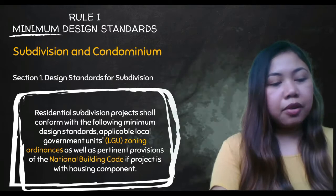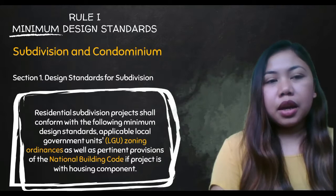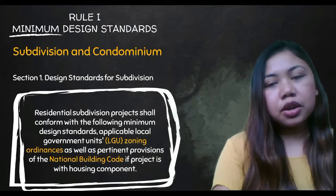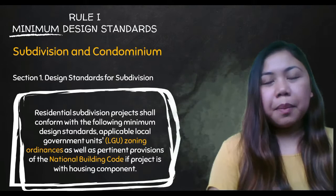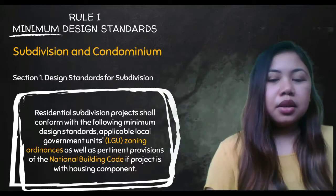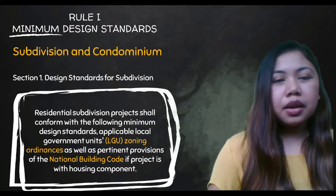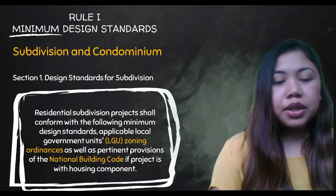Zoning ordinances define agricultural zones, industrial zones, and residential zones. The subdivision you apply for must be in a residential zone. If your location is in an agricultural zone, the owner must undergo processes to have it reclassified as residential. If your subdivision includes houses, it must also follow the National Building Code.